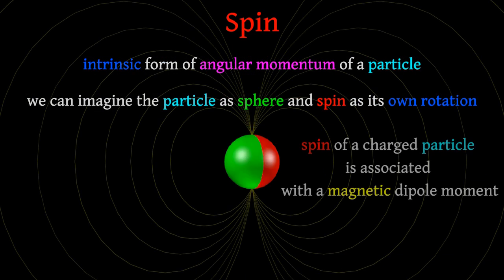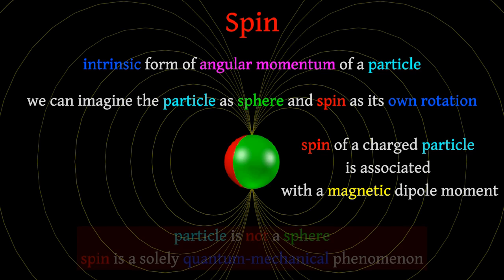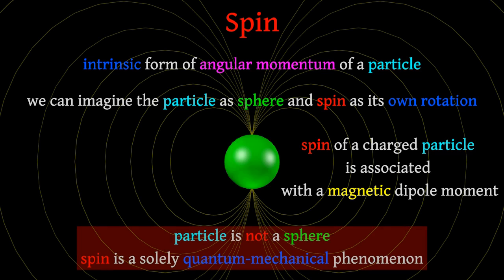Spin was originally conceived as the rotation of a particle around some axis, that is related with its magnetic properties. So we can imagine the particle as a sphere and spin as its own rotation. However, really, the particle is not a sphere and spin is a solely quantum mechanical phenomenon. It does not have a counterpart in classical mechanics, so it cannot be interpreted classically or in our usual point of view.